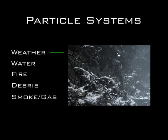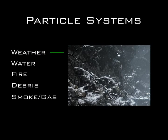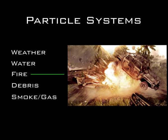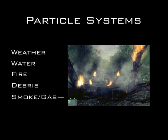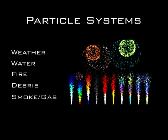Particle systems can simulate an event that would otherwise require many different objects moving in different directions very fast. Particle systems in games are usually two-dimensional, but are always rotated in real time to face wherever the player is, to make them look 3D.